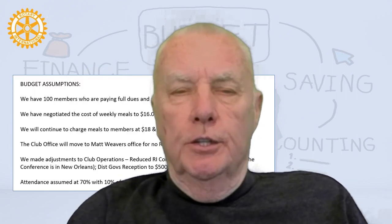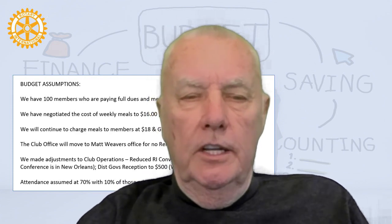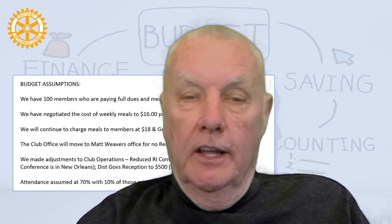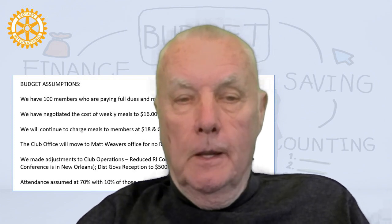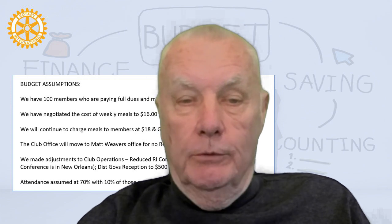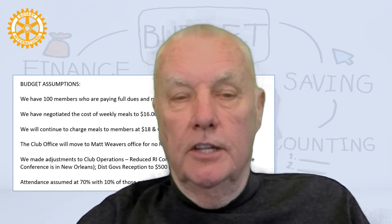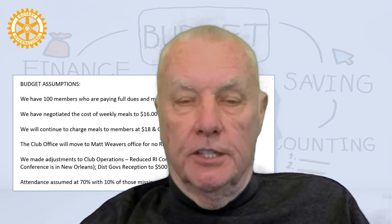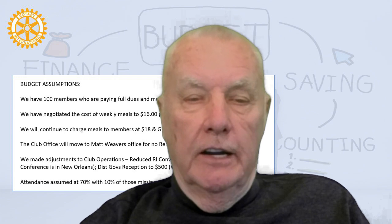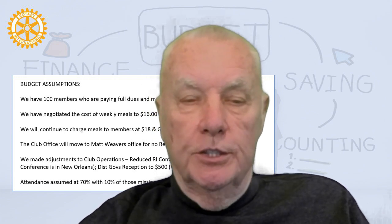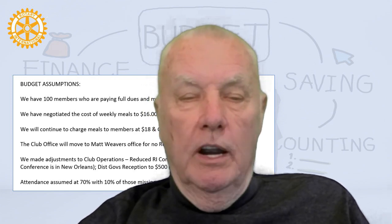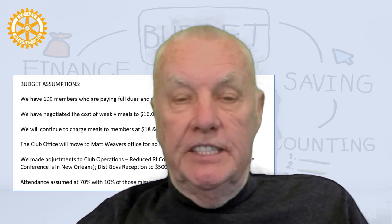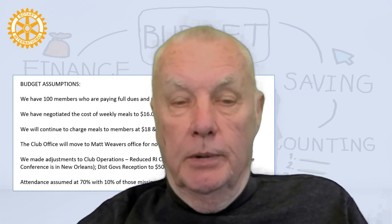So how do you do a budget? When I talk about reading financial statements, I say start with the notes — same thing. When you're going to make a budget, start with the notes. The notes in the case of a budget are: what are the assumptions? How many members do you have? What are the dues? How much is it going to cost to do something? Just write that all down so that when somebody else looks at the budget, they can see what your assumptions were in creating it.